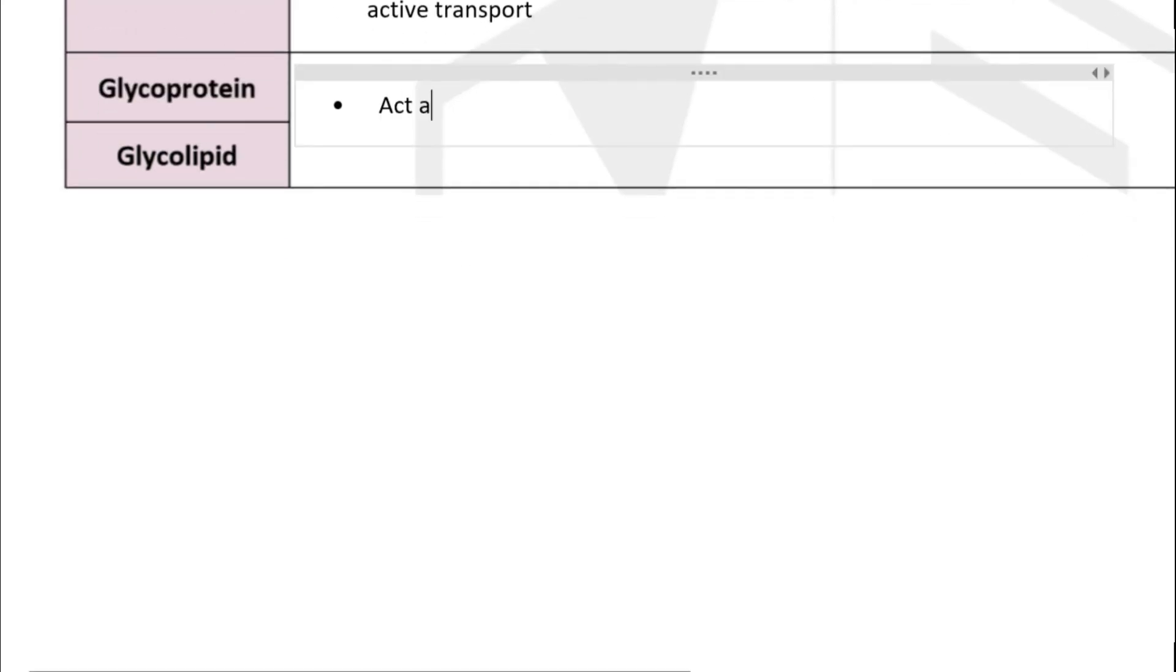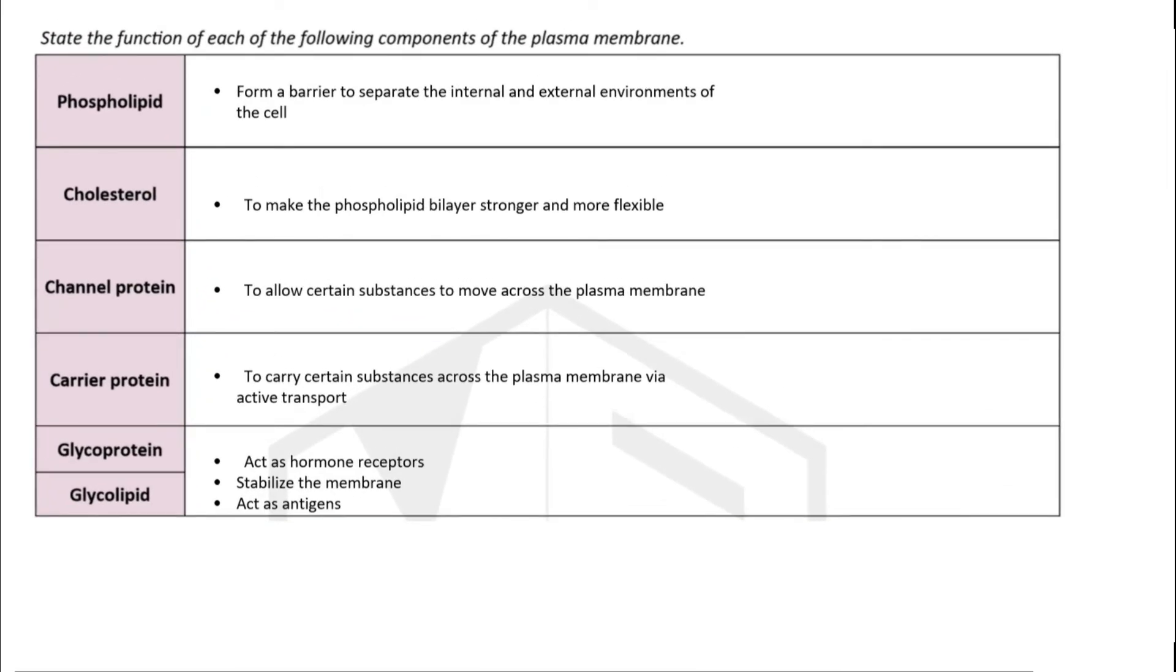Glycoproteins and glycolipids together have several functions. They act as hormone receptors, they stabilize the plasma membrane, and they also act as antigens. This is the function of the plasma membrane.